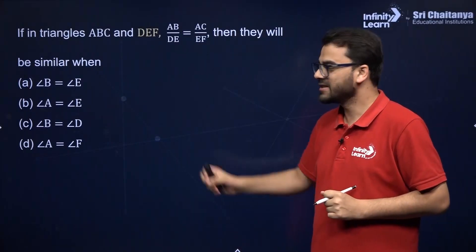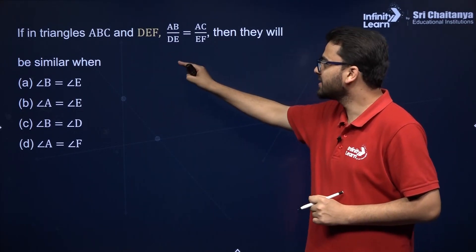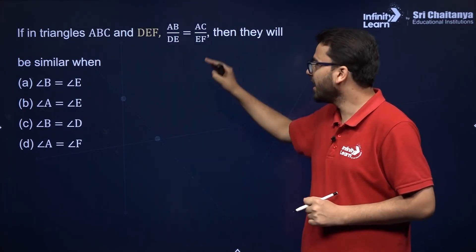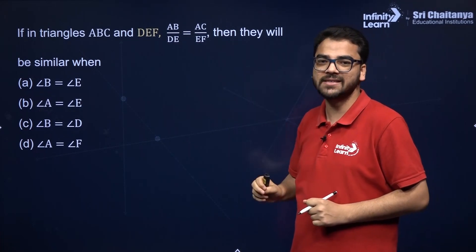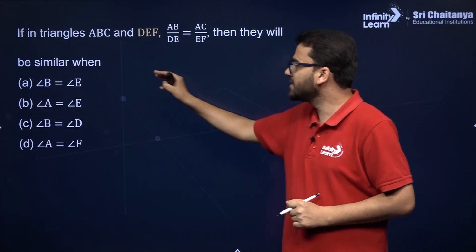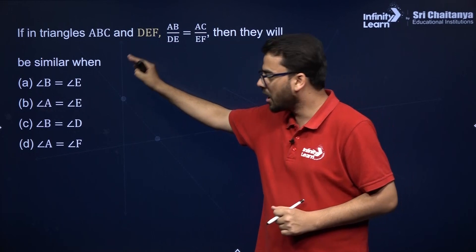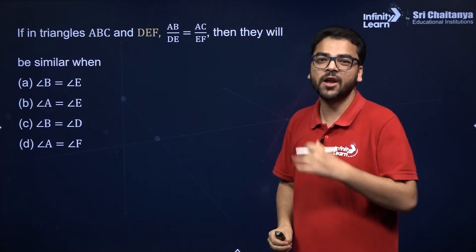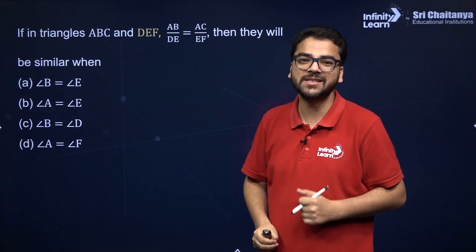This is the first question. If in triangles ABC and DEF, AB by DE is equal to AC by EF, then they will be similar when? Which of these conditions will work in order to prove these two triangles to be similar?